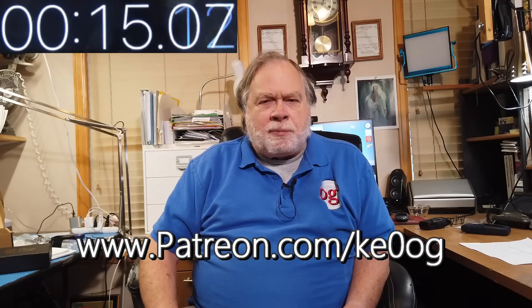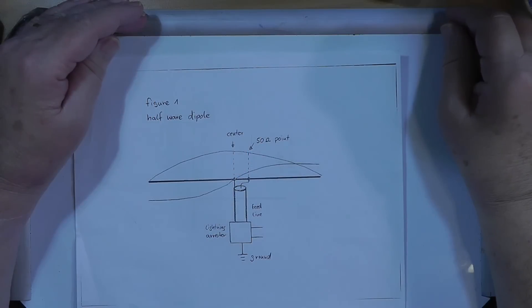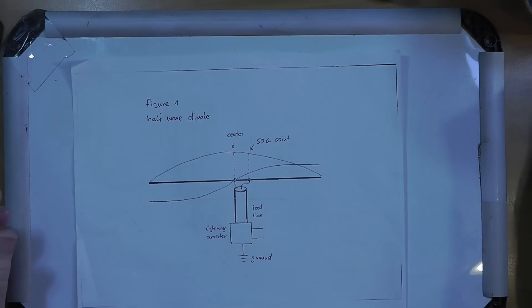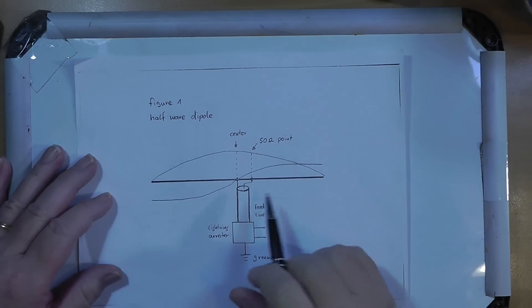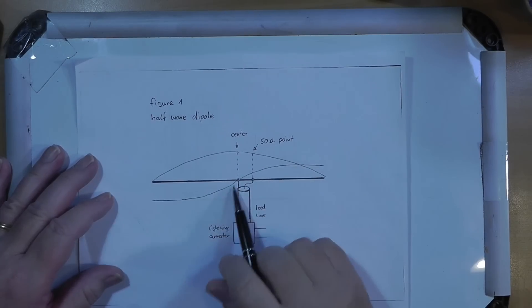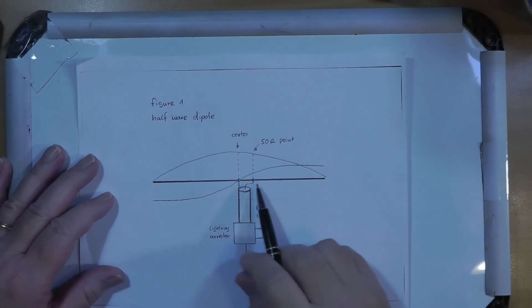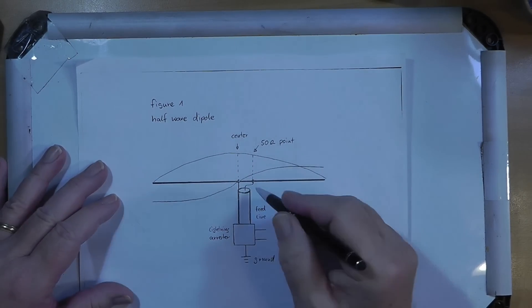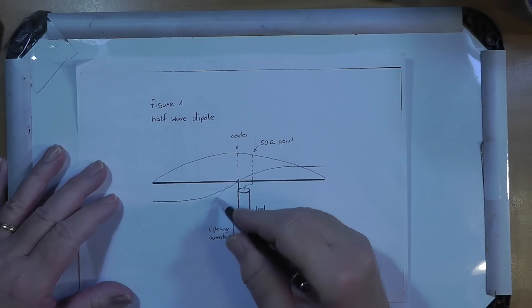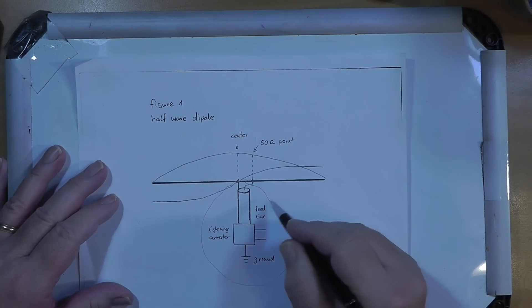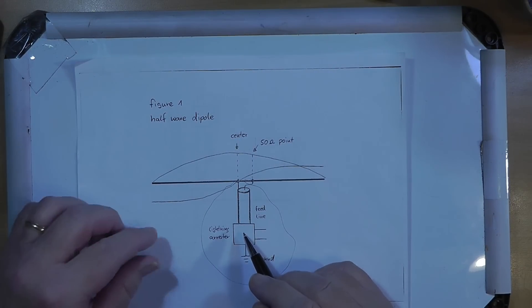Let's take a look at this dipole and see what's going on. I was sent this drawing of a dipole. His question had to do with where to feed it, how to feed it, center, 50 ohm point, whatever. I want to look at this part right here because this is not how dipoles are normally fed.